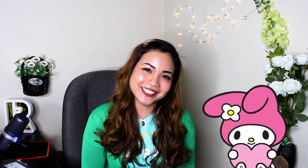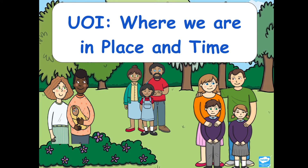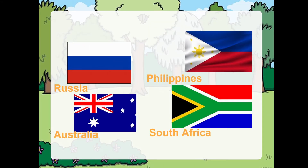So let's start! In this video, you will learn UI — where we are in place and time. Remember those countries that you have learned or discussed in class? We learned about Russia, Australia, Philippines, South Africa, and maybe you picked up some information from your friends about where they are from.